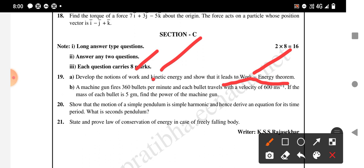Next: a machine gun fires 360 bullets per minute and each bullet travels with velocity 600 meters per second. If the mass of each bullet is 5 grams, find the power of the machine gun.